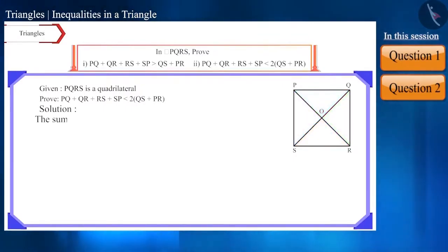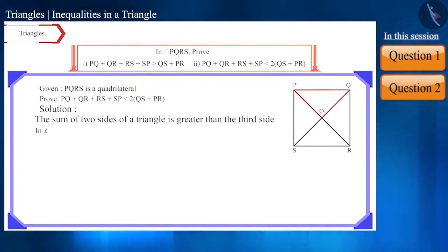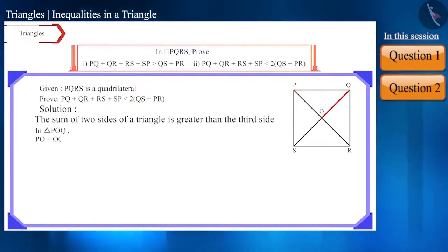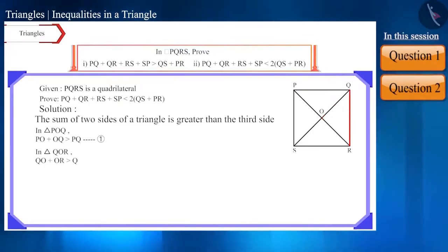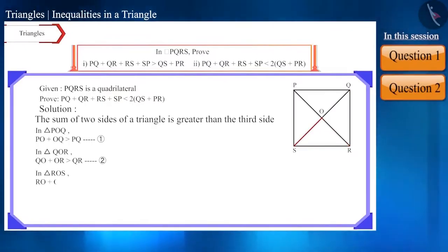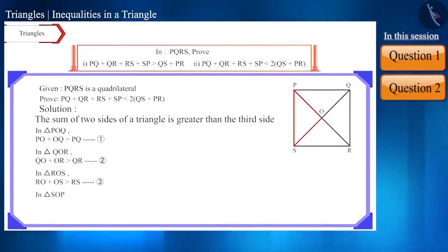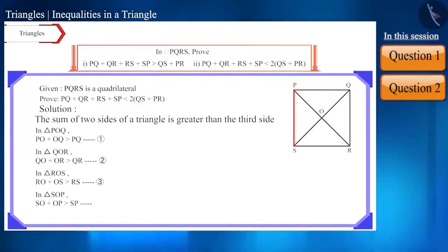We know that the sum of any two sides of a triangle is greater than the third side. Hence, in triangle POQ, the sum of side PO and side OQ is greater than side PQ. Similarly, in triangle QOR, the sum of side QO and side OR is greater than side QR. In triangle ROS, the sum of side RO and side OS is greater than side RS. In triangle SOP, the sum of side SO and side OP is greater than side SP.